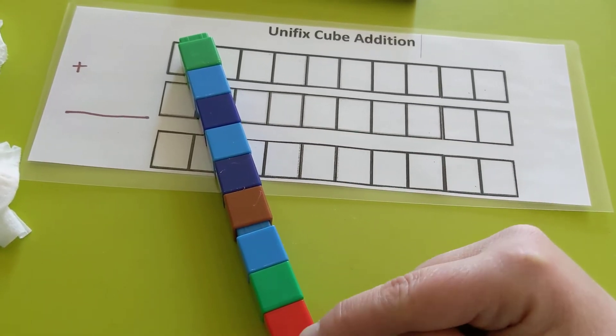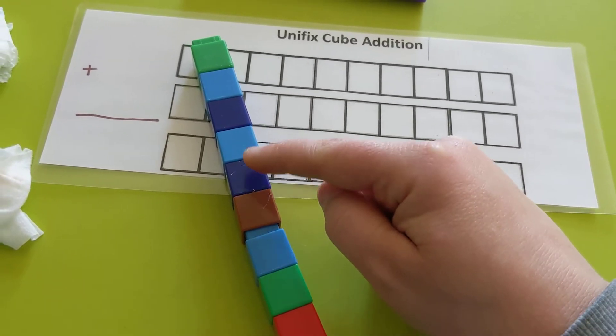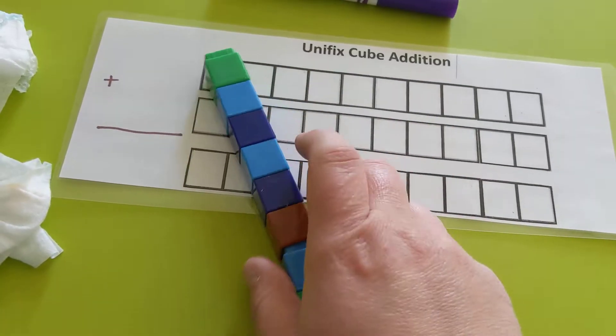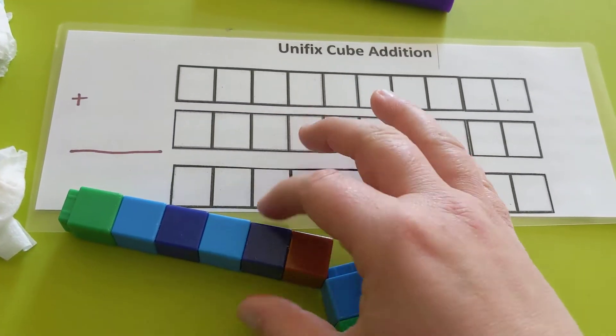So, 6 plus 3 equals 1, 2, 3, 4, 5, 6, 7, 8, 9. So we're going to do that on the paper and I'll show you.